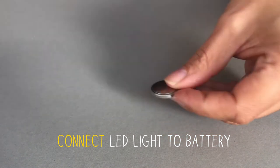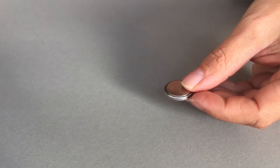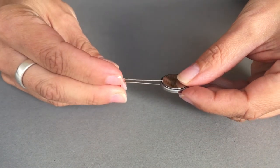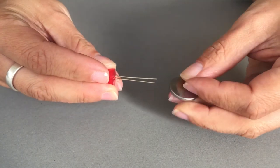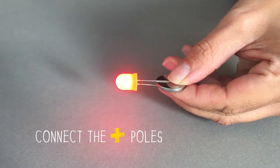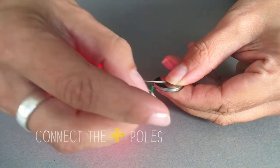Now we're going to connect the LED light to the battery. If you don't connect them the right way, the LED light will not light up. Be sure to connect the plus pole of the LED light to the plus pole of the battery.